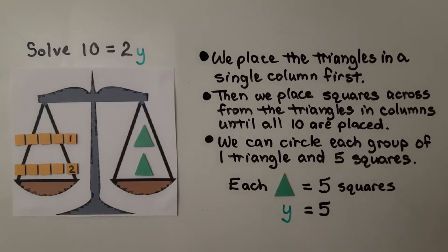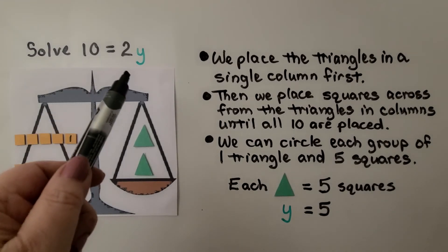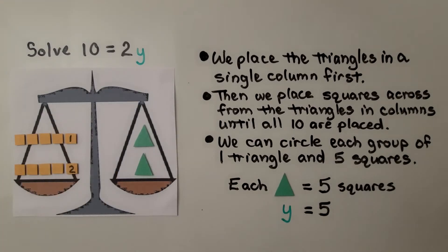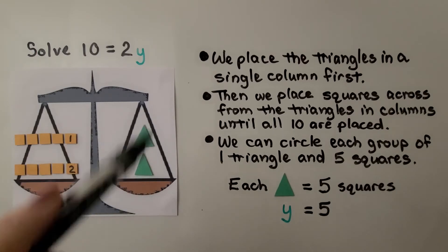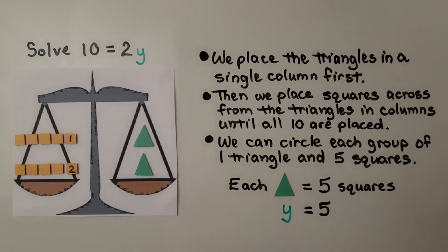Here it's telling us to solve 10 is equal to 2y. We place the triangles in a single column first. So now they're on this side. Then we place squares across from the triangles in columns until all ten are placed. We have two here in a column.